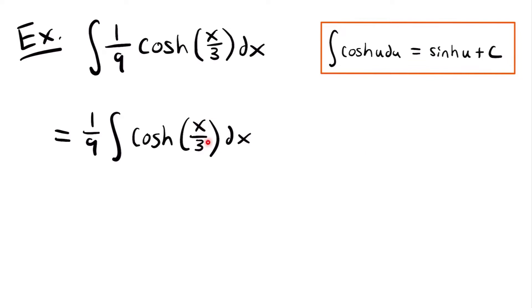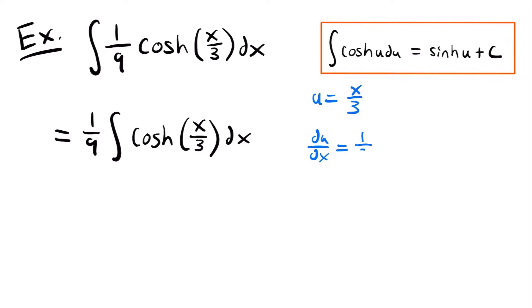Let's set u equal to that inside function, so u is equal to x divided by 3. Remember, whenever you use u-substitution, the function's derivative must be found within your integral. In this case, since it's just x to the first power, the derivative is just a constant — one third — so we don't need to worry about any variables. Taking the derivative: du/dx equals one third, so the derivative of x divided by 3 is one third.